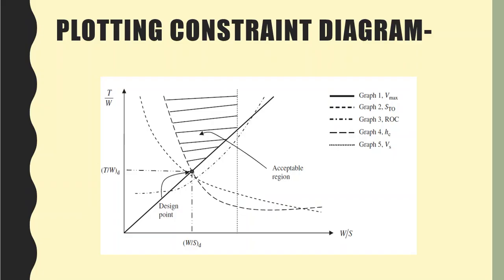Let's have a look at it. Now here is an example of a constraint diagram. In the constraint diagram we are actually plotting on the y-axis the thrust by weight ratio, and on the x-axis we have the wing loading.